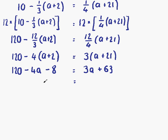What we can do now is simplify where possible. Once we do that, we're going to put our letters on the left and numbers on the right. But first, to simplify, we have some like terms on this side. 120 minus 8 is 112. So we have minus 4a plus 112 equals 3a plus 63.